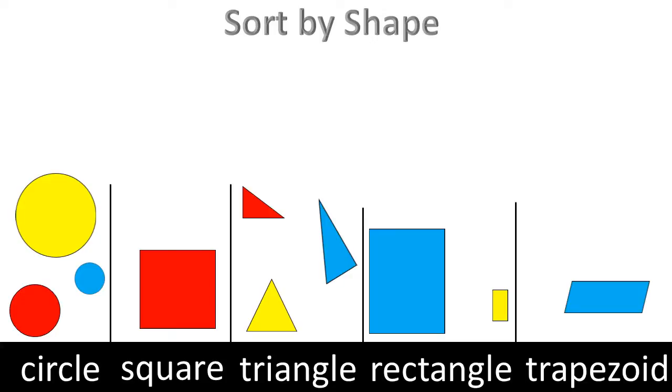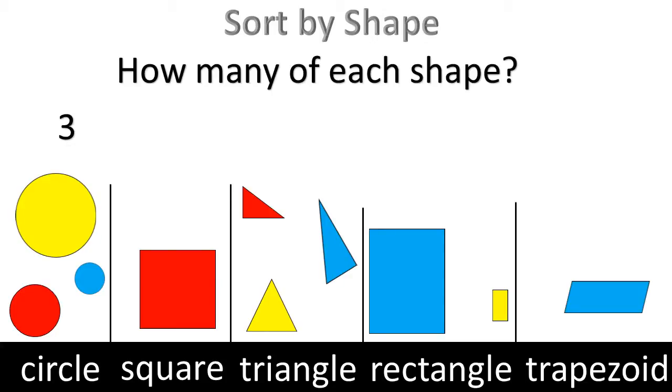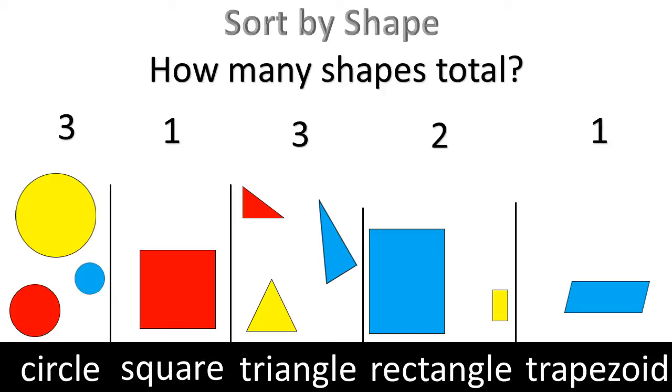How many of each shape? Three. One. Three. Two. One. Three. How many shapes total? Three. Two. One. Two. One. Two. Ten.